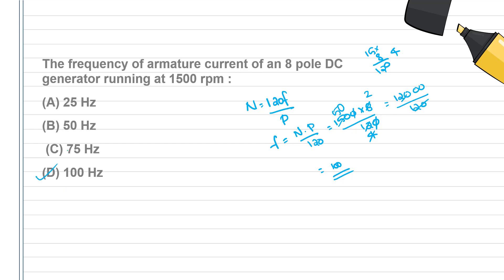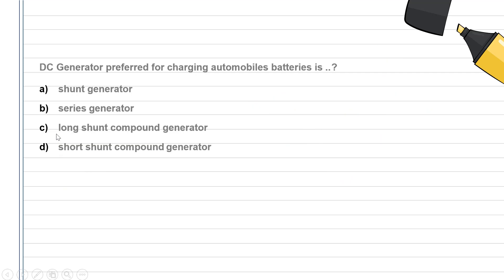The DC generator preferred for charging automobile batteries is? You can use the charging generator. For battery charging, we will use the constant output voltage, and we will use the shunt generator.